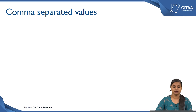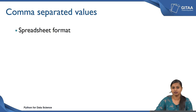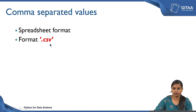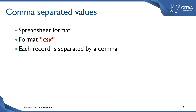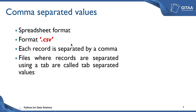Now let us see comma separated values. Comma separated values can be stored in a spreadsheet format and the format being represented here is CSV, where it is just the abbreviation of comma separated values. Whenever you see a spreadsheet with the extension .csv, then you call them as comma separated values. In this case each record is separated by a comma, but there are other ways where the record can also be separated. Files where records are separated using a tab are called tab separated values.